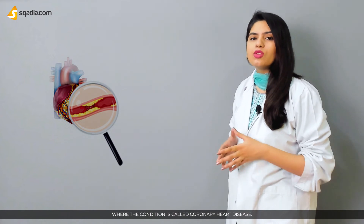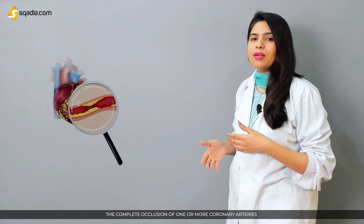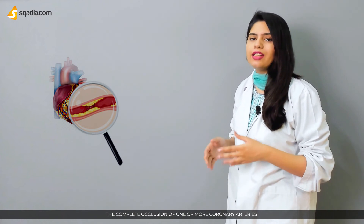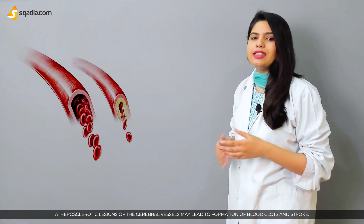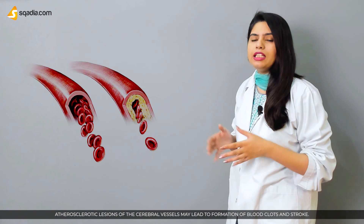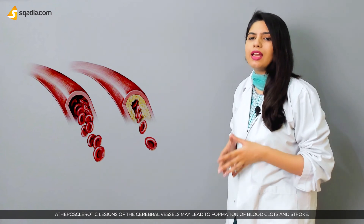Atherosclerotic lesions are frequently found in the aorta or in the large aortic branches. They are also prevalent in the coronary arteries, where the condition is called coronary artery disease. The complete occlusion of one or more coronary arteries can cause death of a section of the heart muscles. Atherosclerotic lesions of the cerebral vessels may lead to the formation of blood clots and stroke.